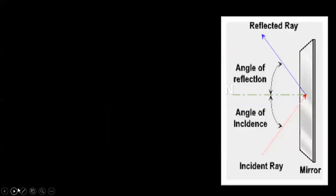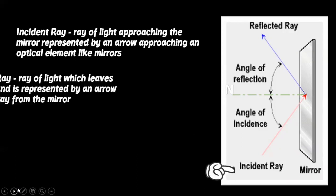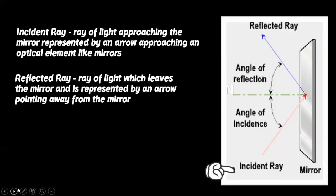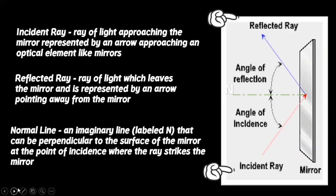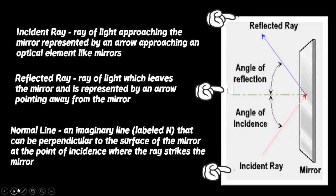To learn more about reflection, here are some terms you have to understand. Incident ray is the ray of light approaching the mirror, represented by an arrow approaching an optical element like mirrors. Reflected ray is the ray of light which leaves the mirror, represented by an arrow pointing away from the mirror. Normal line is an imaginary line labeled N that is perpendicular to the surface of the mirror at the point of incidence where the ray strikes the mirror.